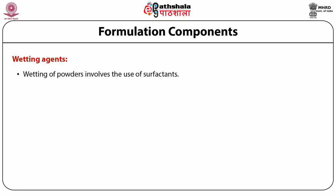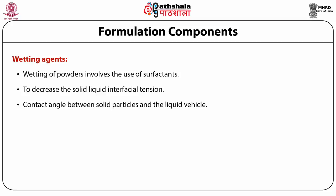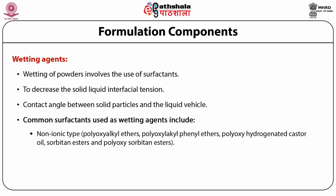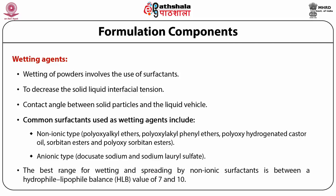Wetting of powder involves the use of surfactants to decrease the solid-liquid interfacial tension and the contact angle between solid particle and the liquid vehicle. Common surfactants used as wetting agents include non-ionic types such as polyoxyalkyl ethers, polyoxyalkyl phenyl ethers, polyoxyhydrogenated castor oil, sorbitan esters and polyoxysorbitan esters. Anionic types include docusate sodium and sodium lauryl sulfate. The best range for wetting and spreading by non-ionic surfactants is between an HLB value of 7 to 10.